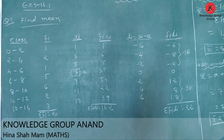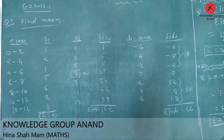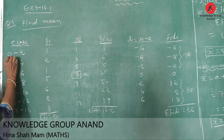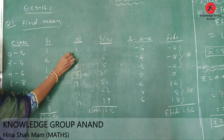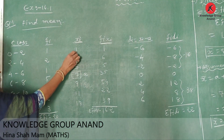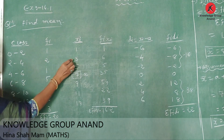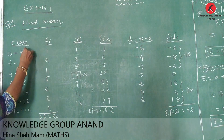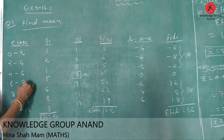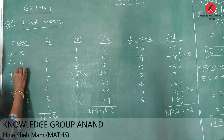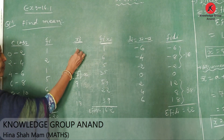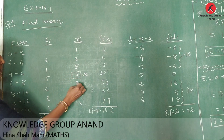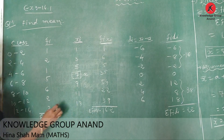We find xi — the class midpoints. For example, 0 plus 2 divided by 2 equals 1. Then 2 plus 4 divided by 2 equals 3. The class size is 2, so we add 2 each time: 1, 3, 5, 7, 9, 11, 13.